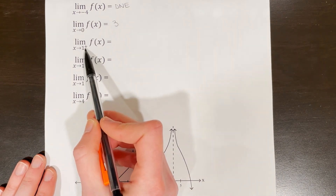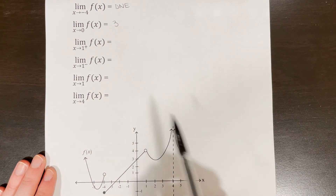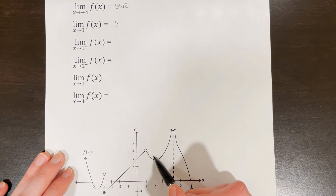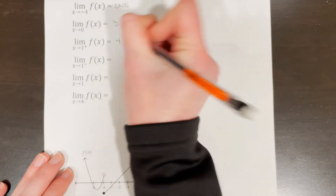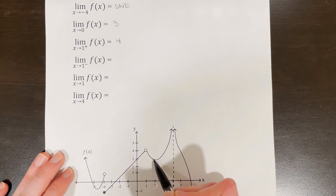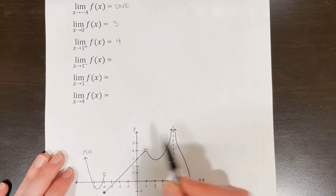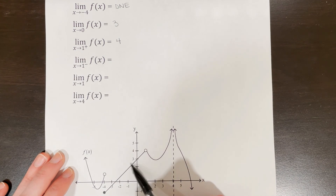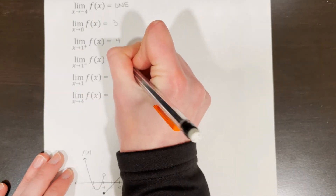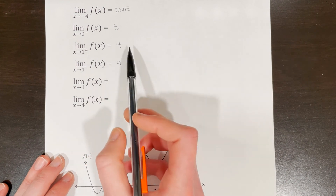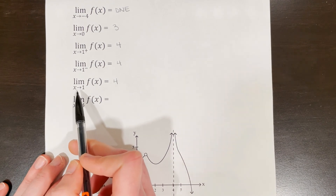The plus sign means finding the right-side limit. For the right-side limit of f of x as x approaches 1, looking at what's happening from the right side, as x approaches 1, y is approaching positive 4. So the right-side limit is 4 — even though 1, 4 is not an actual point on the graph, the limit just asks what the function is approaching. For the left-side limit as x approaches 1, f of x is also approaching 4. Since both the left-side and right-side limits equal 4, the overall limit of f of x as x approaches 1 is also 4.